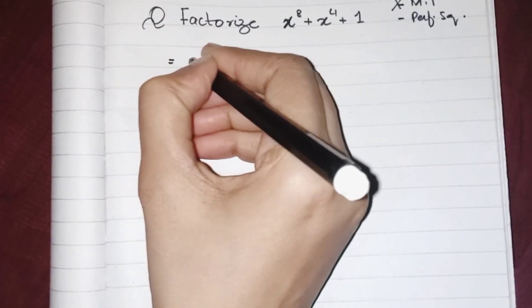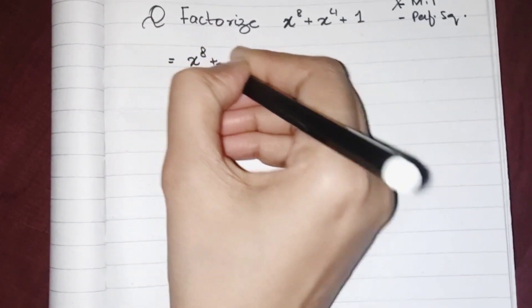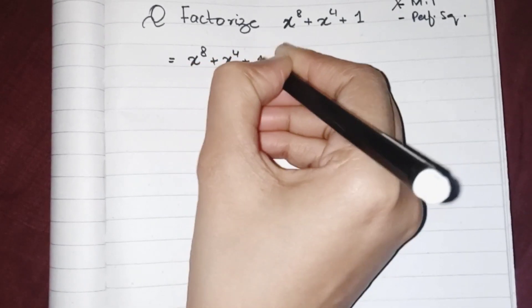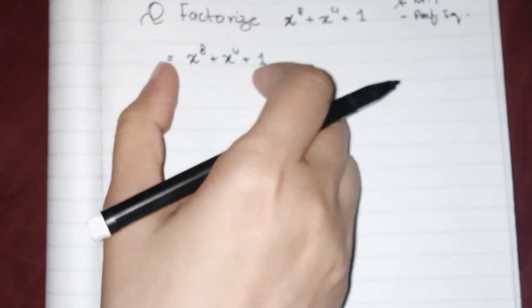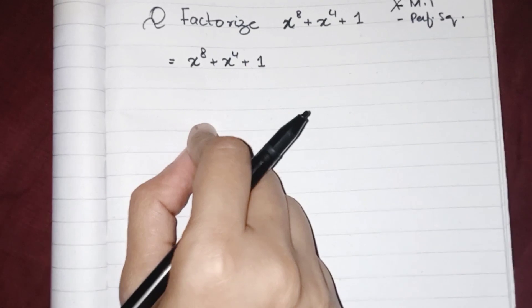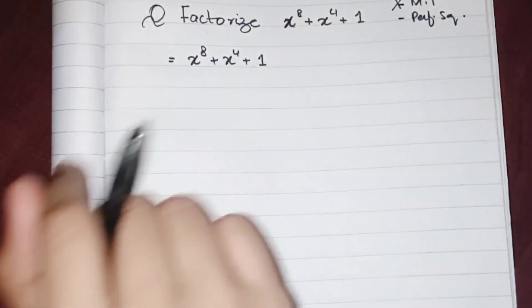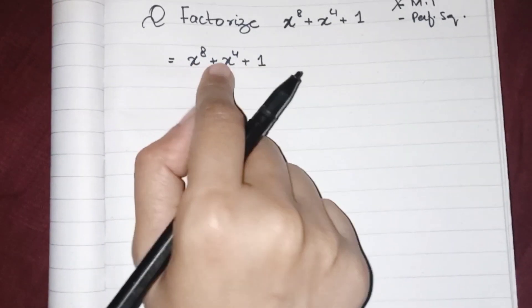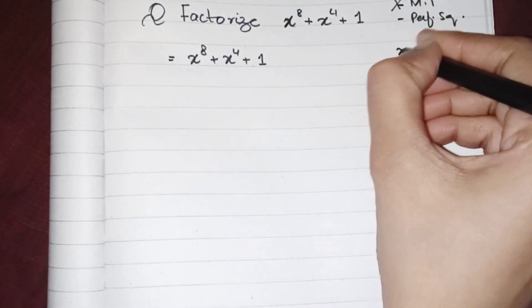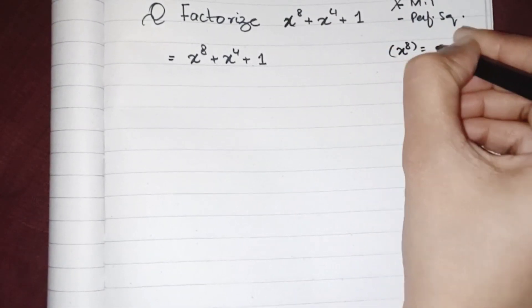The expression is x^8 plus x^4 plus 1. Now we want two perfect square terms to make it a perfect square, but we have all three terms as perfect squares. As we know, x^8 is a perfect square of x^4, x^4 is also a perfect square of x^2, and 1 is itself a perfect square number.